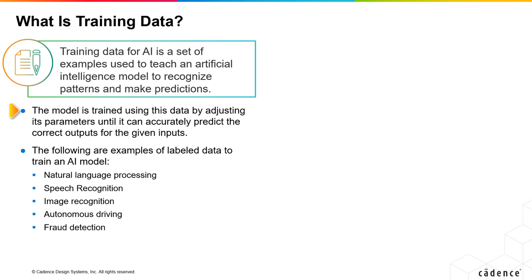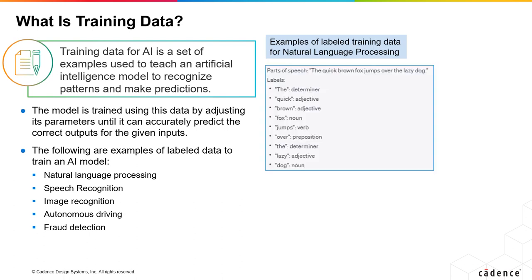An example of labeled data for natural language processing is a collection of text documents with labels that indicate the parts of speech, named entities, or text sentiment.